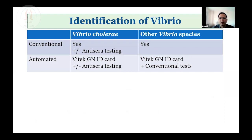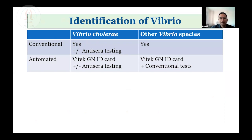Let us go in detail about Vibrio species. We can broadly divide them as Vibrio cholerae and other Vibrio species. As far as the study is concerned, Vibrio cholerae can be identified using conventional biochemical methods, and anti-sera testing is strongly recommended. Even if a center is not able to confirm by anti-sera testing, it can be submitted. There will be an option to select an appropriate identification that I will describe later.